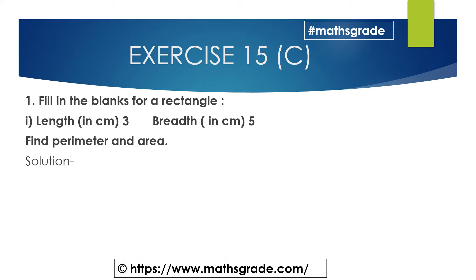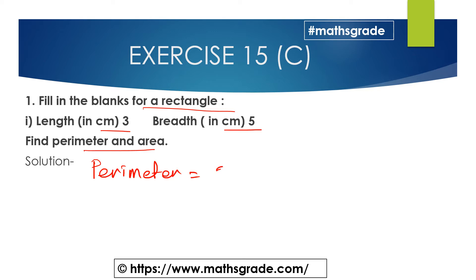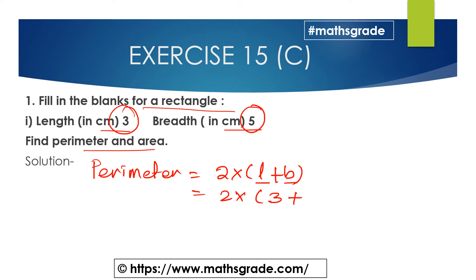Now we'll solve question number one: fill in the blanks for a rectangle. The information given is length is 3 cm and breadth is 5 cm. We have to find the perimeter and area. The perimeter of the rectangle formula is 2 multiplied with length plus breadth. So 2 multiplied with 3 plus 5 is 8, and 2 multiplied with 8 is 16 cm. This is the perimeter of the rectangle.